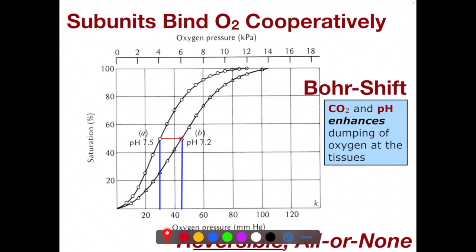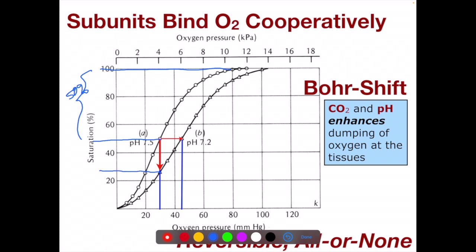With the Bohr shift, the curve is pushed to the right. Say we have oxygen picked up in the lungs at 100% saturation and being delivered to the tissues. Normally you'd have a delivery of about 50% — from 100% down to 50%. But if you have the Bohr shift, you get an additional delivery of about another 25% on top of that. So the total oxygen delivered is about 75% — a tremendous increase in oxygen delivery due to the Bohr shift.